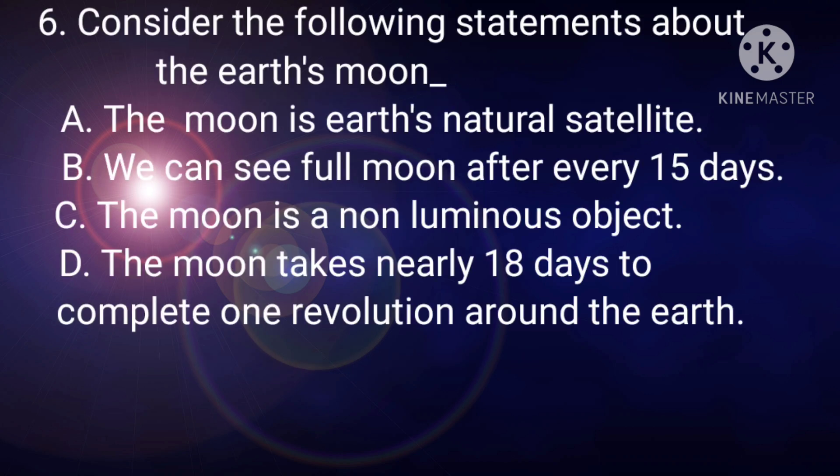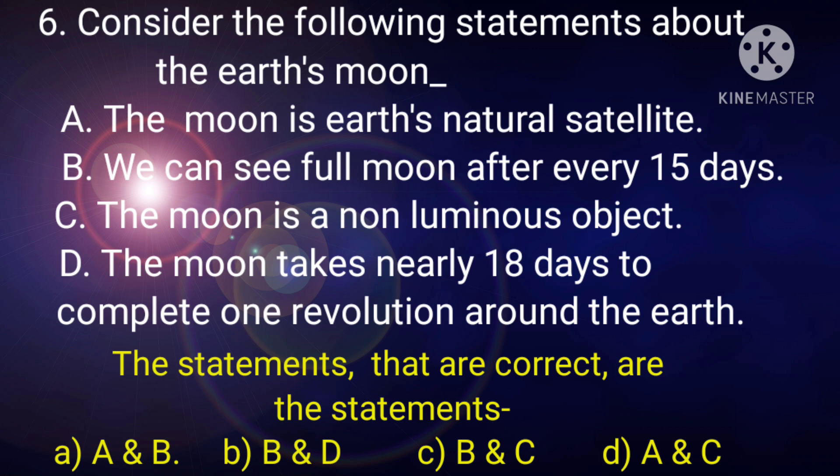Next statement is, consider the following statements about the Earth's moon. The statements are A, the moon is Earth's natural satellite, B, we can see full moon after every 15 days, C, the moon is a non-luminous object, D, the moon takes nearly 18 days to complete one revolution around the Earth. The statements that are correct are, options are A and B, B and D, B and C, A and C. Out of given statements, option D, A and C, both the statements are correct. So answer will be option D, A and C.